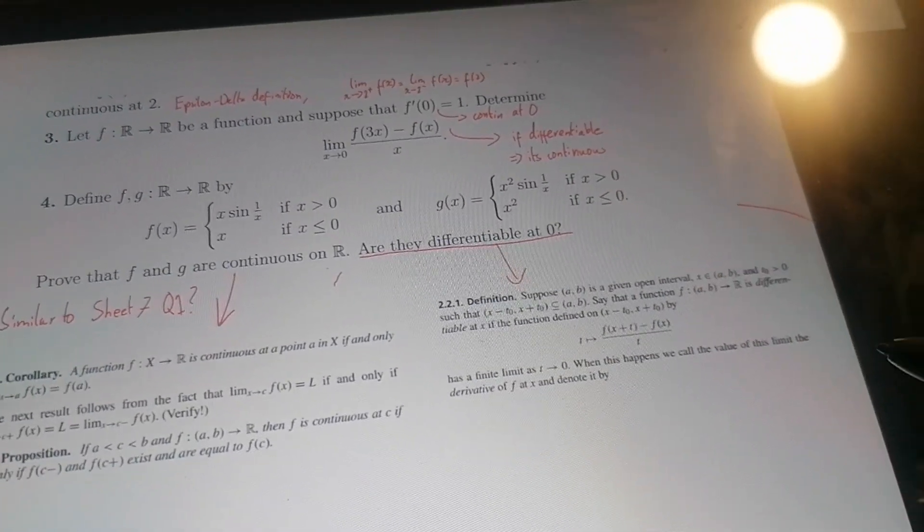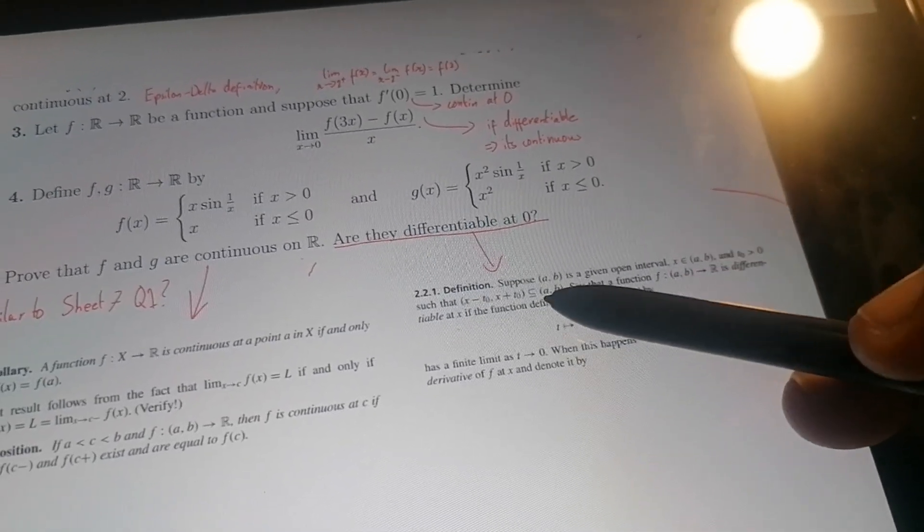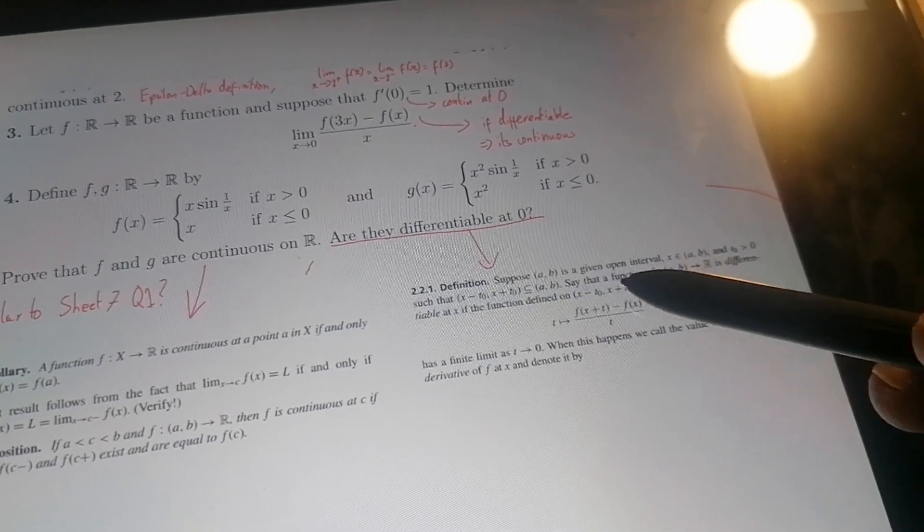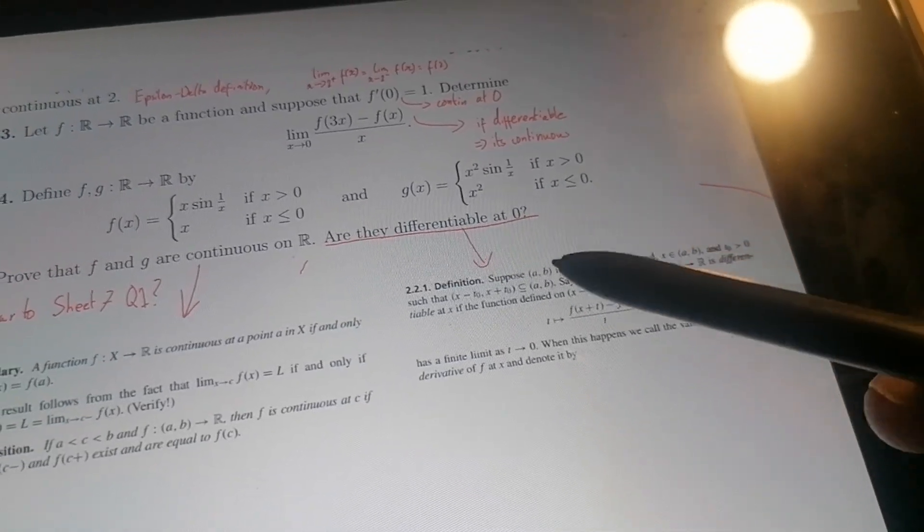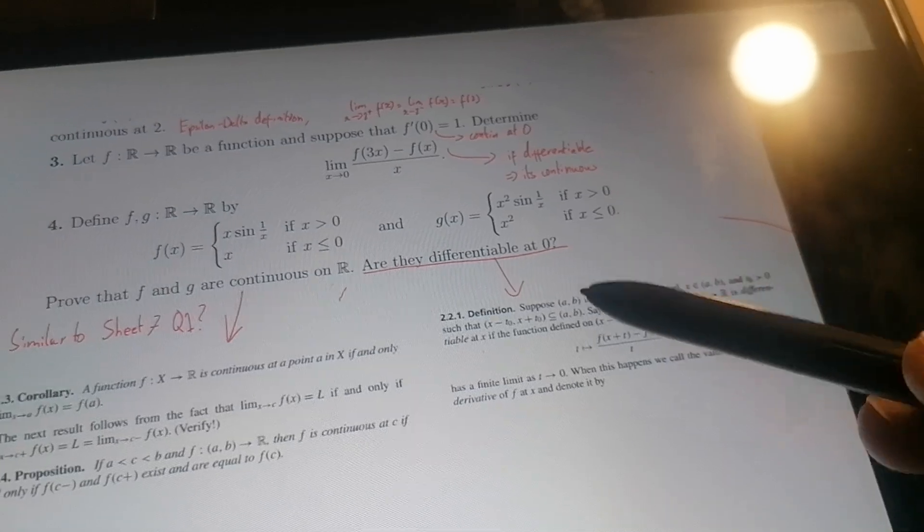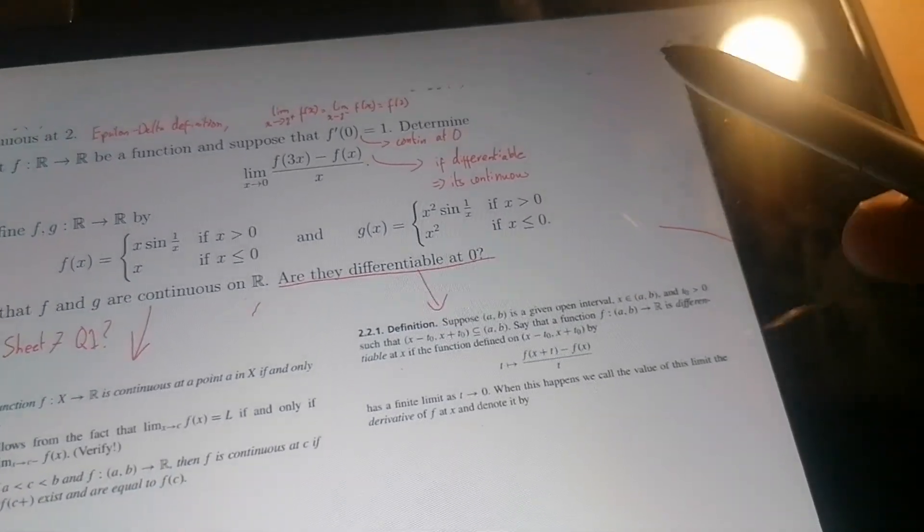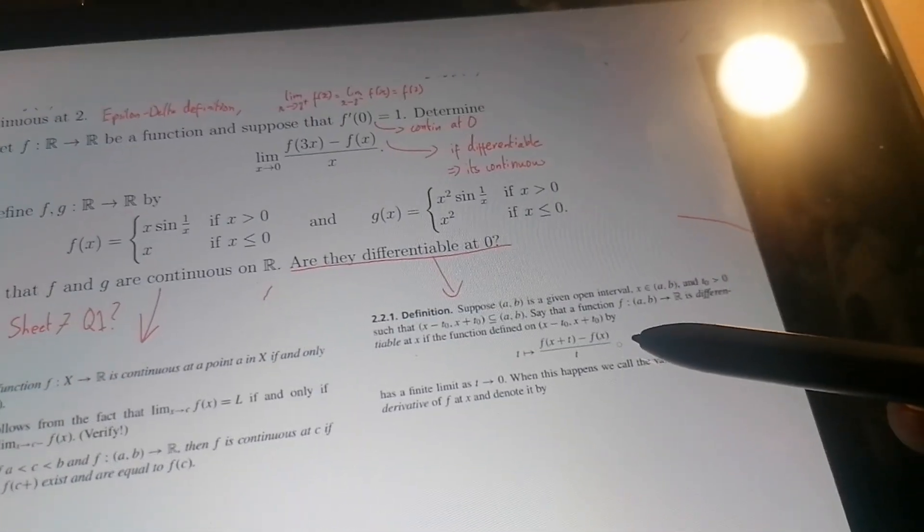This open interval part is kind of throwing me off. I'm thinking if I just say let a be minus a quarter and b be a quarter, like I just make an open interval of minus a quarter to a quarter, that should make it okay.